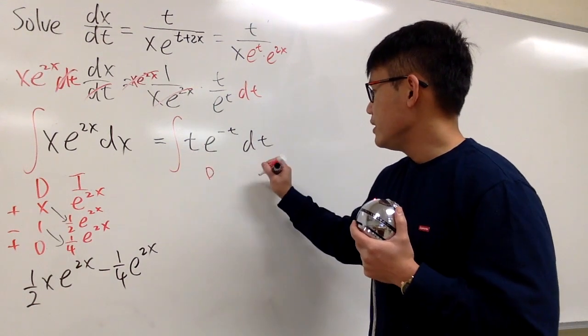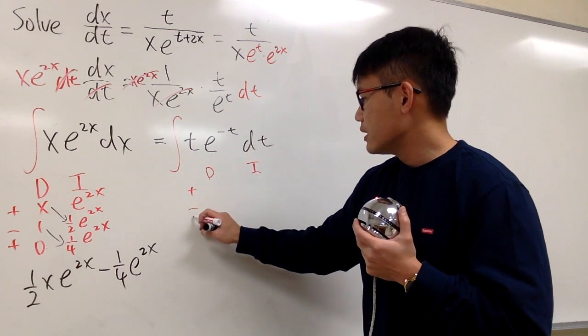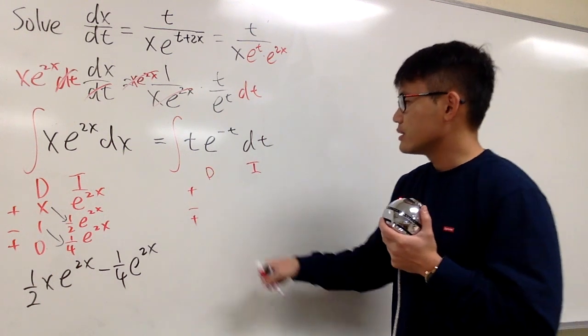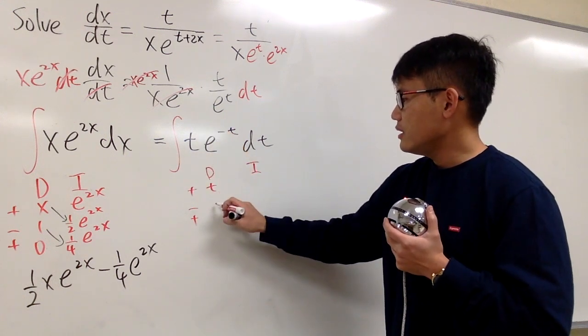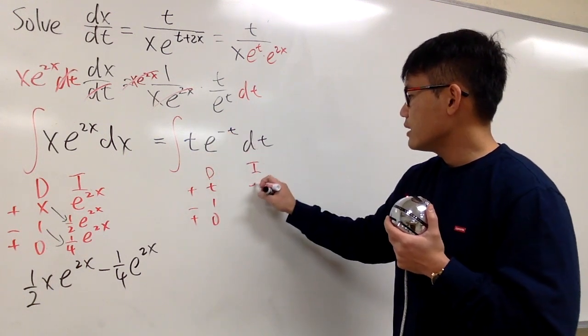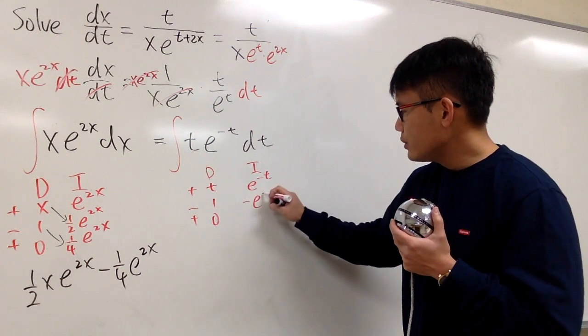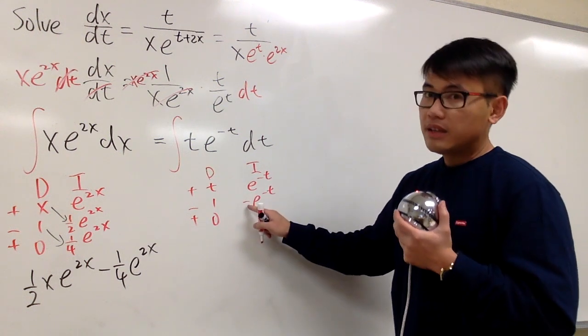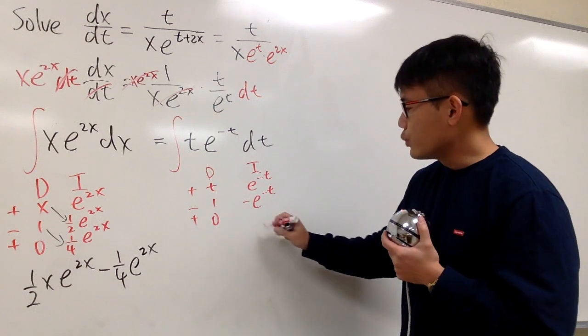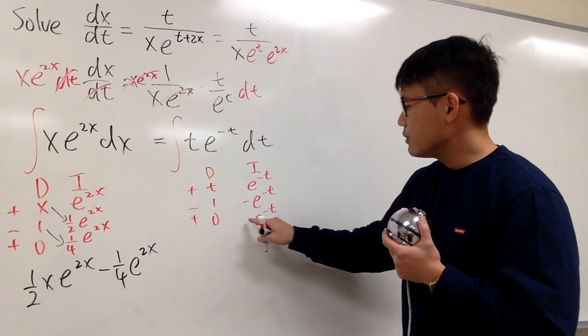And once again, we need to use the DI method for the integration by parts. I need 3 of them, 3 rows. Let's differentiate t, so we get 1 and 0. Let's integrate e to the negative t. Right here, we will have negative e to the negative t. Do it again. Negative, negative becomes positive, so we will just have e to the negative t, positive right here.